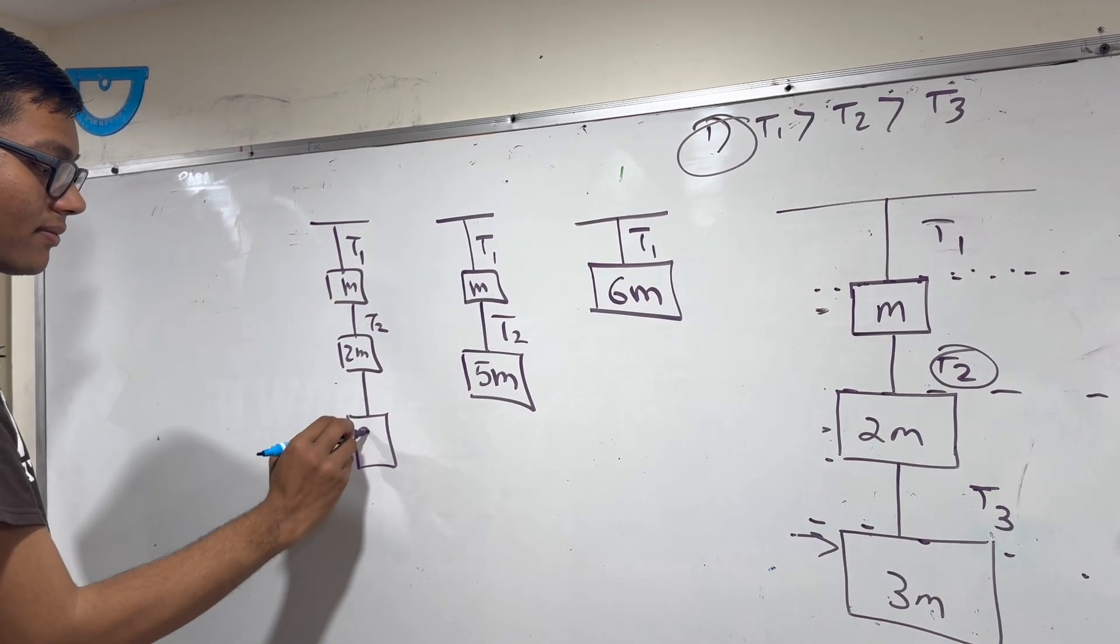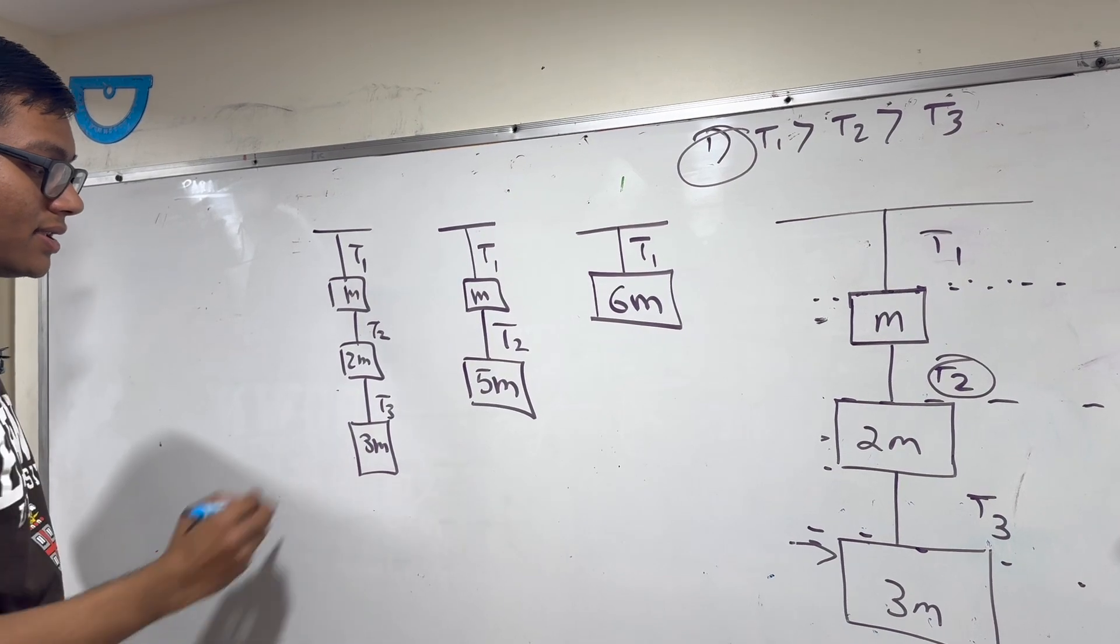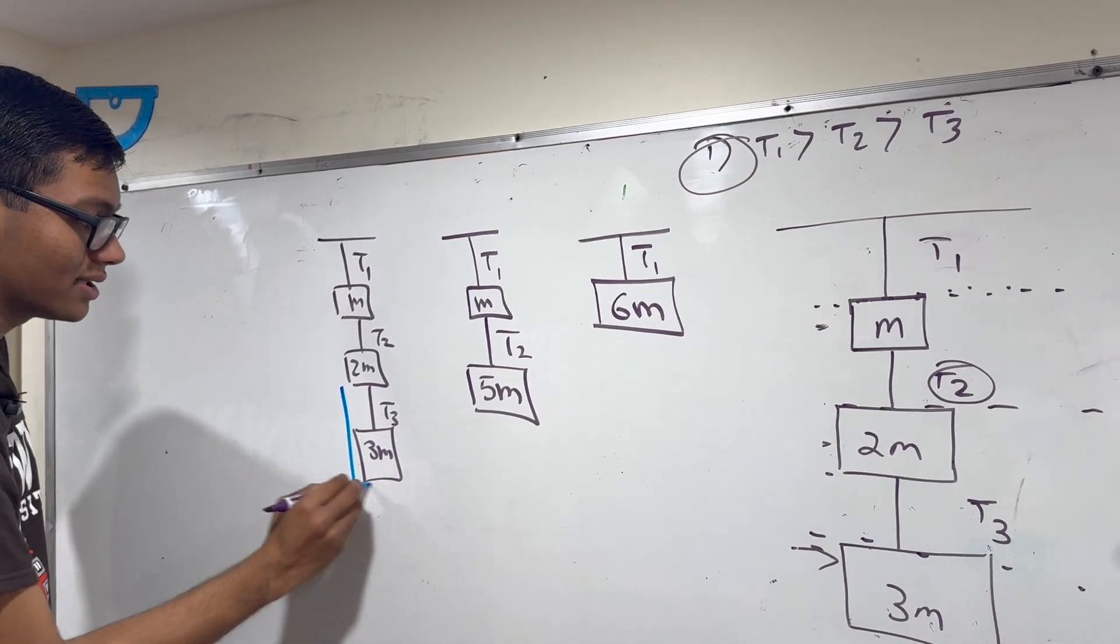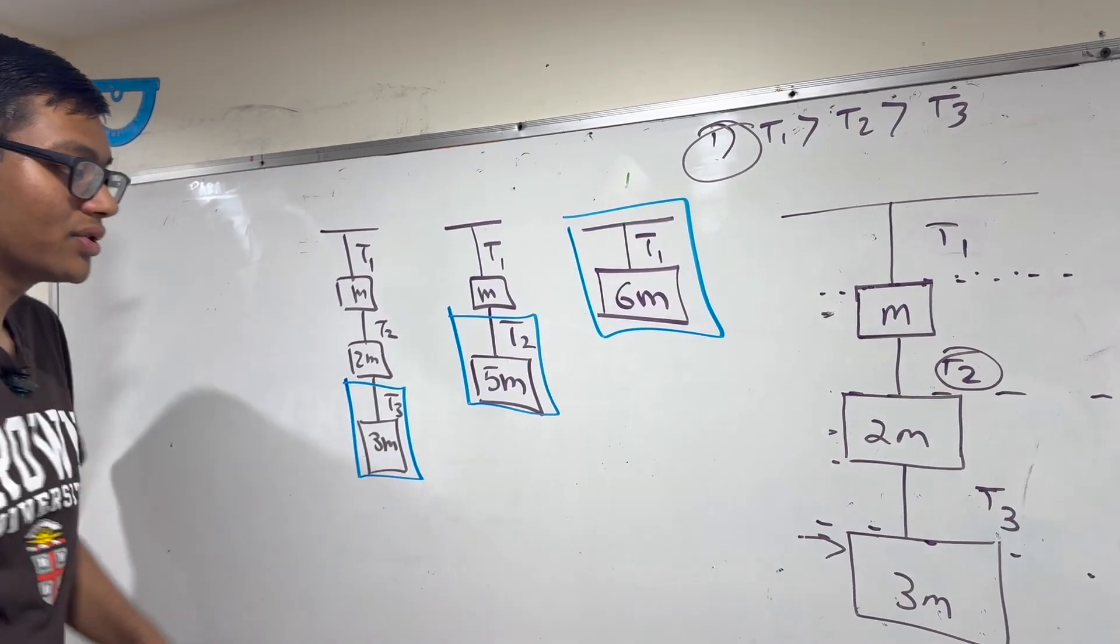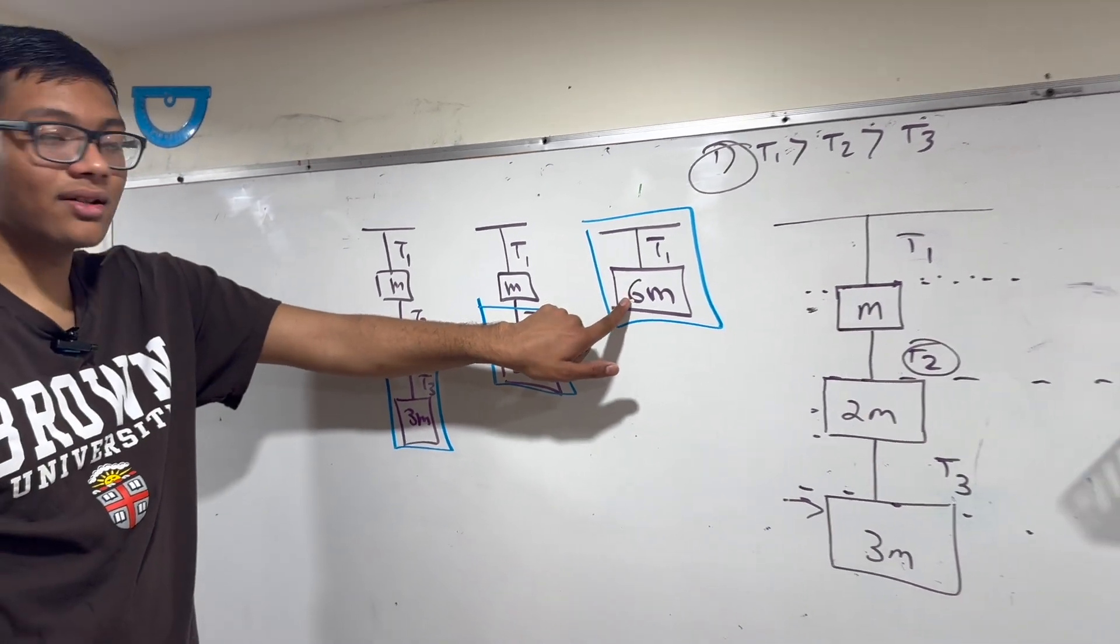And the third rope T3 only knows what's below it, so T3 only knows that it has to pull 3m. So T3 only has to handle this weight, T2 only has to handle this weight, and T1 has to handle this weight.